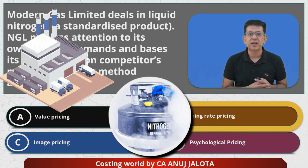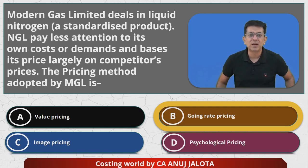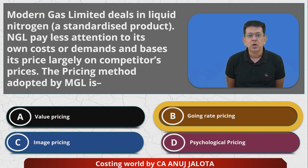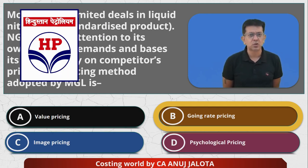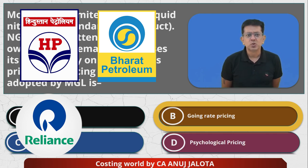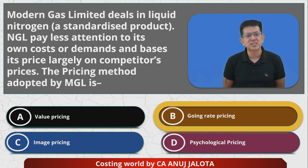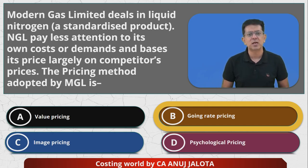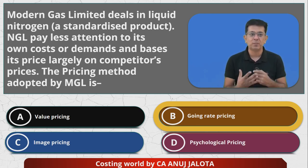Consider this: the company makes liquid nitrogen, which is not meaningfully different from what other companies make. Think of petrol — when filling petrol in your car or bike, do you ever think 'this is HPCL, this is BPCL, this is Reliance'? It hardly matters. This company produces a standard product with lots of competition, so the market price becomes the selling price. The answer is B, going rate pricing.